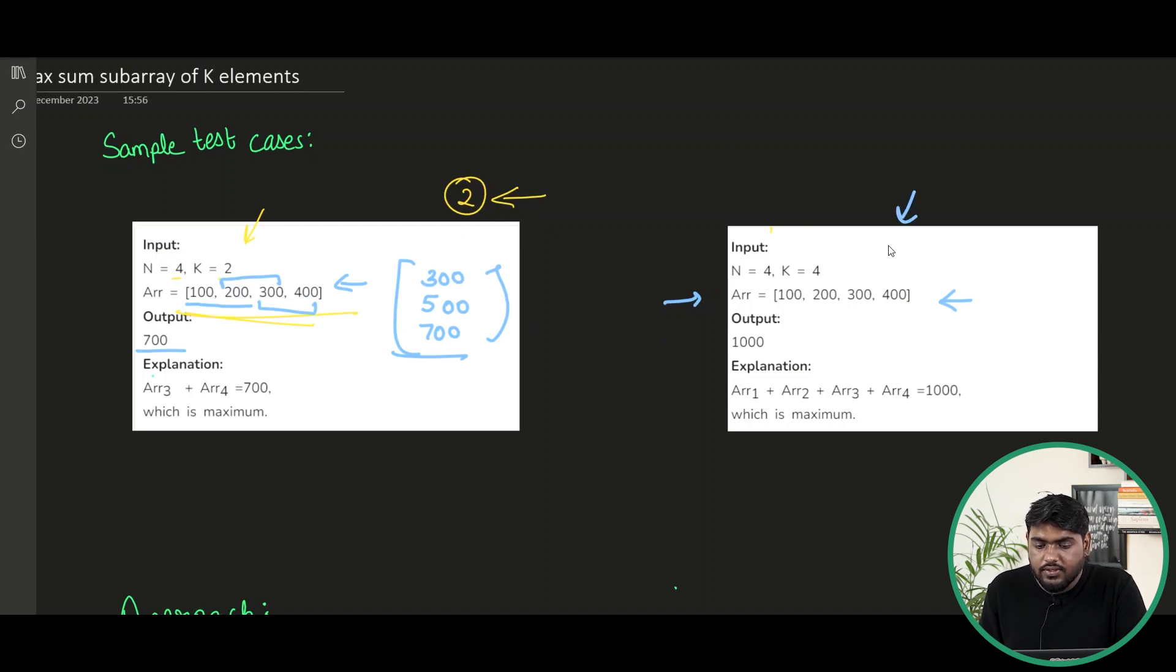Now let's talk about this sample test case. This time you are given the size as 4. That means we have to take a chunk of array which is of size 4. Now the whole array is actually of size 4 only. That means we can make total of all and all will be summing up to 1000. That will be the answer.